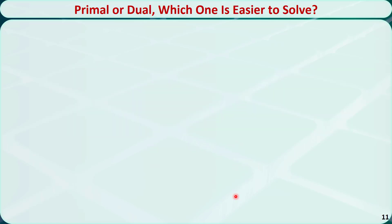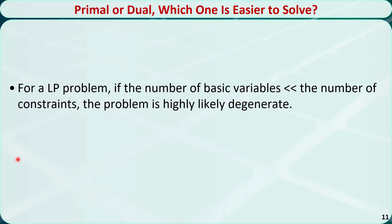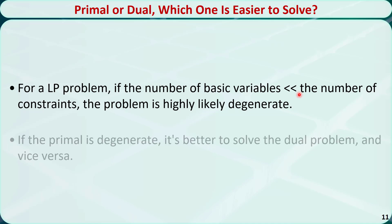Each linear programming problem can be formulated from two perspectives: primal and dual. We can solve the primal using the primal simplex method and the dual using the dual simplex method. The question is when should we use each. If the number of basic variables is much smaller than the number of constraints, the problem is highly likely degenerate. Therefore, if the primal is degenerate, it's better to solve the dual problem, and vice versa.